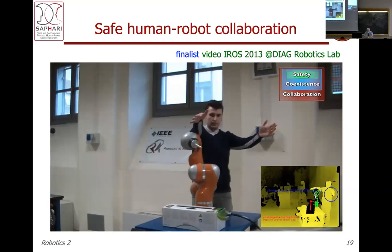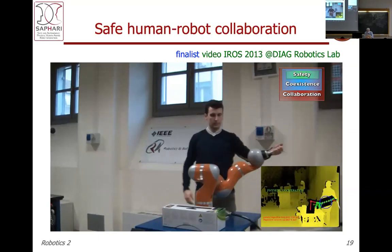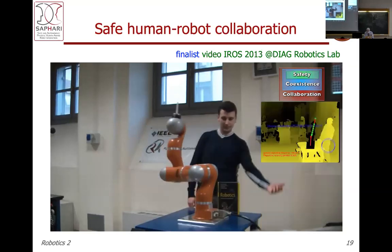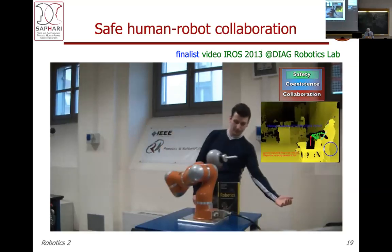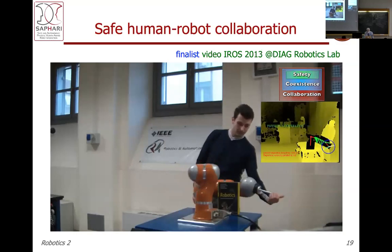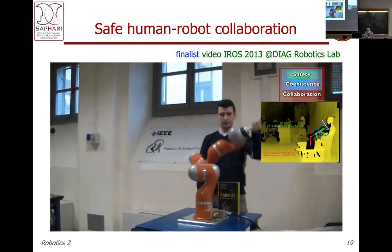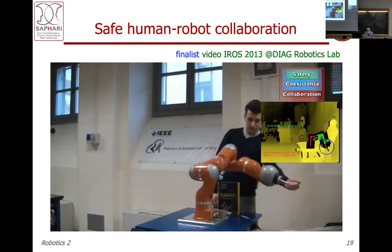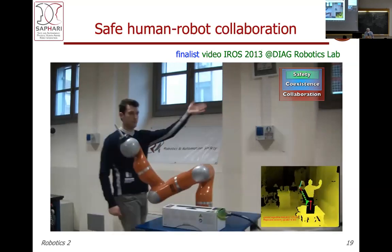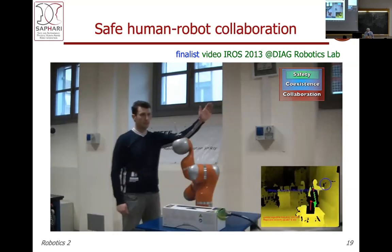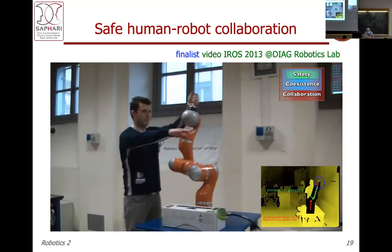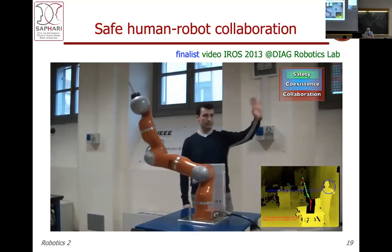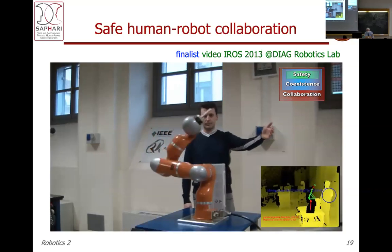This is a hierarchical strategy: if you want to collaborate, you still have to avoid any other collision, so coexistence has a higher priority than collaboration. If following a collaboration command would cause the robot to hit another part of the body, the robot resists — coexistence is more important than collaboration.